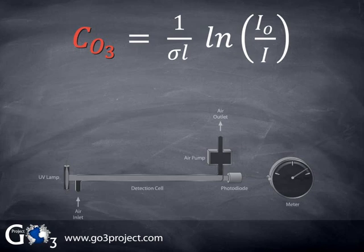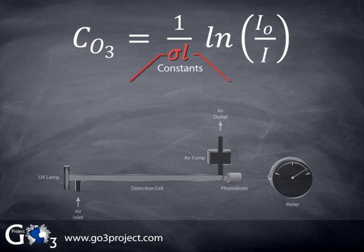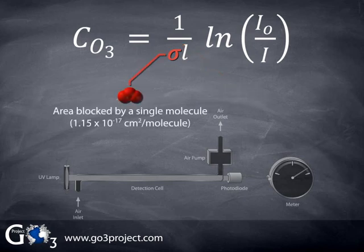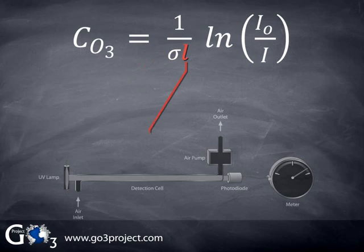Here, C sub-ozone is the concentration of ozone in units of molecules per cubic centimeter, or molecules per cc. Sigma and L are two constants that are fixed for our experiment. Sigma is a fundamental property of the ozone molecule called the absorption cross-section, and L is the length of the detection cell. Sigma, or the absorption cross-section, can be thought of as the effective area blocked by a single molecule of ozone.